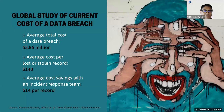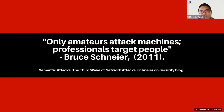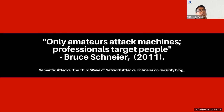Security guru Bruce Schneier noted: 'Amateurs attack machines; professionals target people.' People are the weakest link. It only takes one person in the organization to click on a phishing link to compromise the entire organization, because that single click can be the attack vector that starts a ransomware attack.